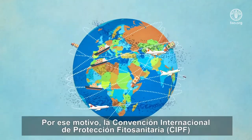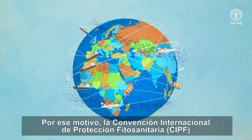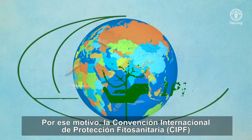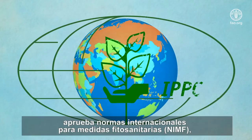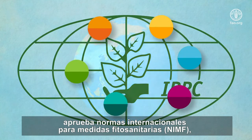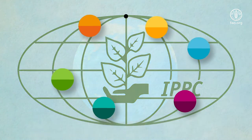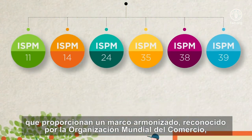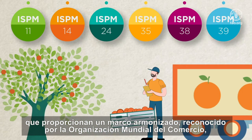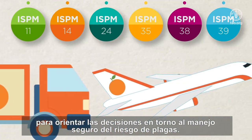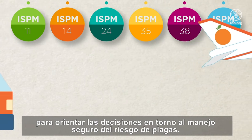That is why the International Plant Protection Convention adopts international standards for phytosanitary measures — ISPMs — which provide a harmonized framework recognized by the World Trade Organization to guide decisions around the safe management of pest risks.